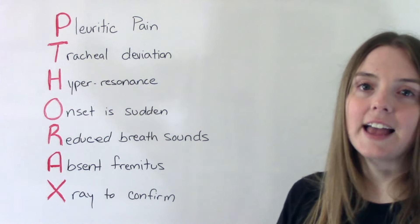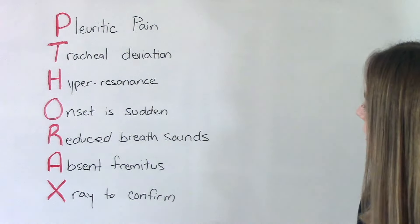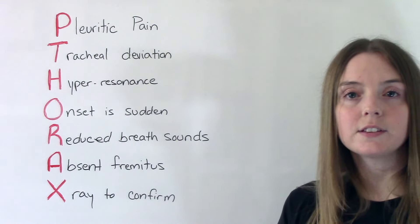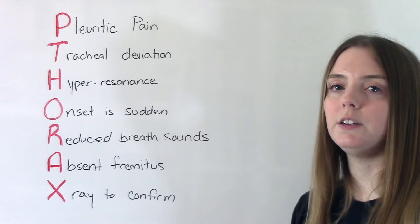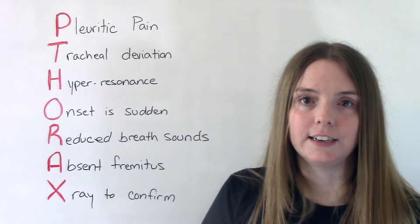O - the onset is sudden, so it occurs right away. R - they're going to have reduced breath sounds. So when we auscultate, when we listen to their lung sounds, they're going to be very quiet and diminished, hard to hear.